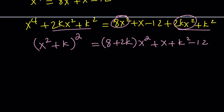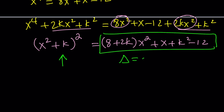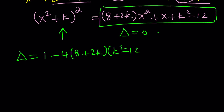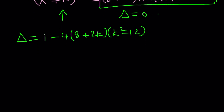Now the left-hand side is a perfect square, so the right-hand side also needs to be a perfect square. Since the right side is quadratic in x, the discriminant must equal zero. The discriminant — delta — is b squared minus 4ac, where c is the constant term, k squared minus 12.